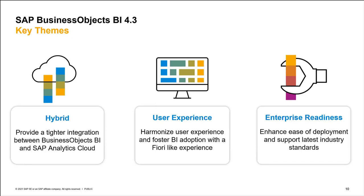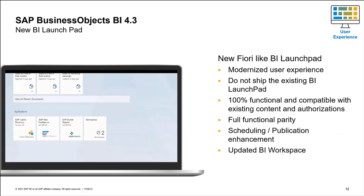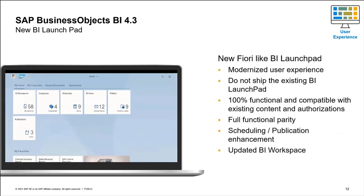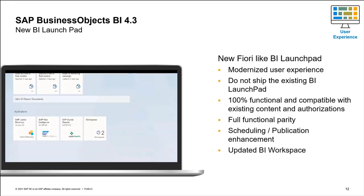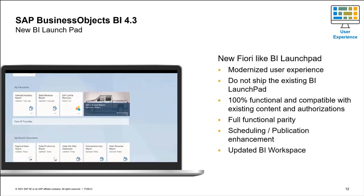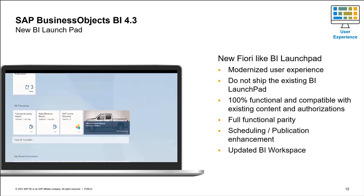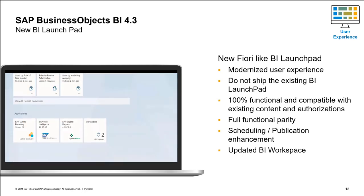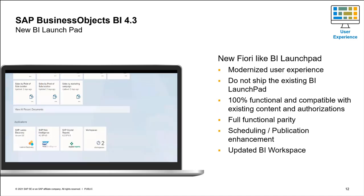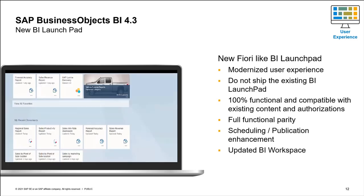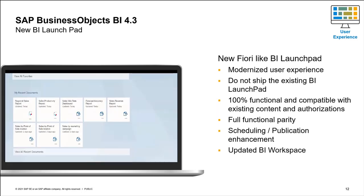Inside BI 4.3, end users will find new interfaces to access existing content within a simplified and modernized experience. What you see on screen is the new BI Launchpad — the only launchpad in BI 4.3. The BI Launchpad from 4.2, for example, is not part of BI 4.3. But only the interface is new — all existing content and existing deployments remain exactly the same. This includes all security and authentication set up in 4.2. Going from 4.2 to 4.3 can be a simple update, if you want.